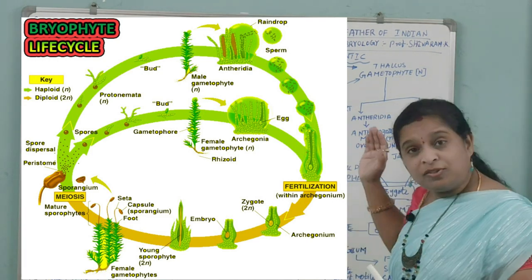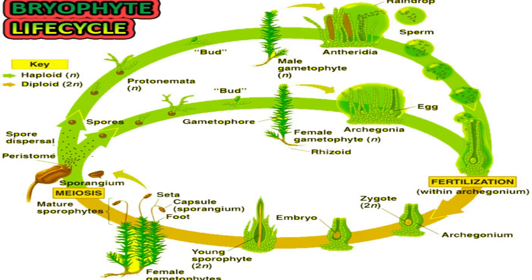Archegonia are flask-shaped structures, while antheridia are round or oval shaped. Both archegonia and antheridia are jacketed, meaning they are protected from external factors. The flask-shaped archegonium consists of neck canal cells, venter canal cells, and an egg cell in the center. The antheridia have a round or oval shape.